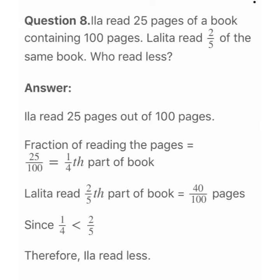Lalita read 2 fifths of the book. The total is 100 pages, so we make the denominator 100: 5 multiplied by 20 equals 100, and 2 multiplied by 20 equals 40. So Lalita read 40 pages. Comparing the two, Eela read only 1 fourth of the book while Lalita read 2 fifths, so Eela read less.